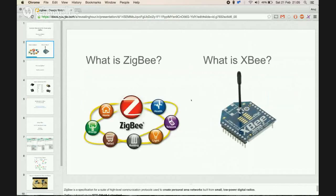On the first slide, we'll see what the difference between ZigBee and XBee is. ZigBee is basically a specification for a high-level communication protocol used to create personal area networks. These are built on small, low-power digital radios based on the IEEE standard 802.15.4.